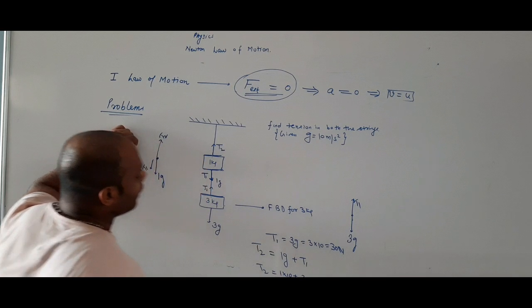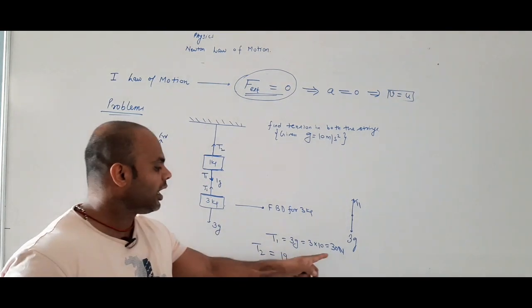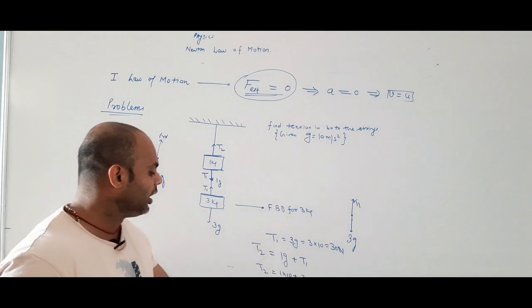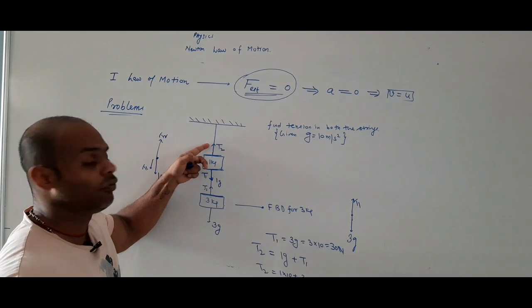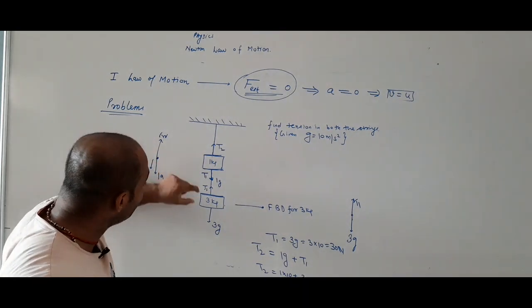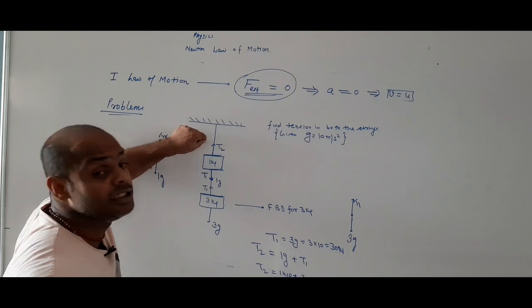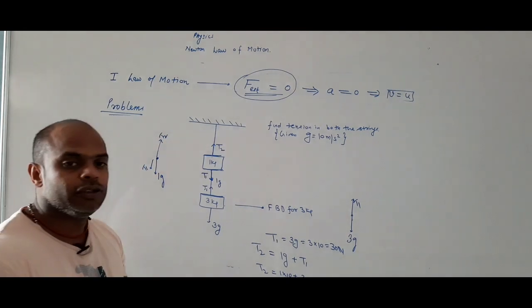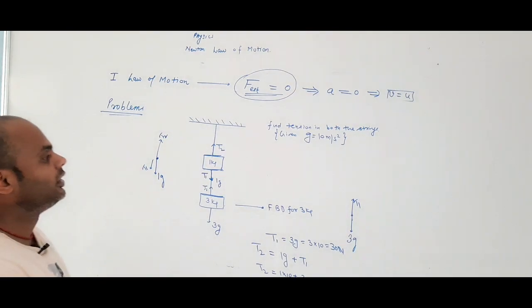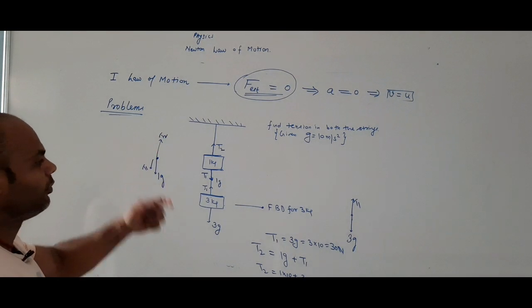You see, the tension in the lower string is 30 Newton, but the upper string carries 40 Newton because it holds two weights. So it is more. This is the first type of problem which we can solve in this way.